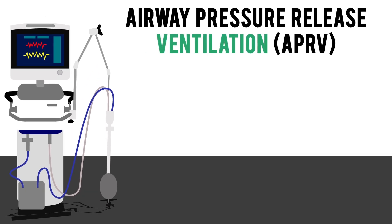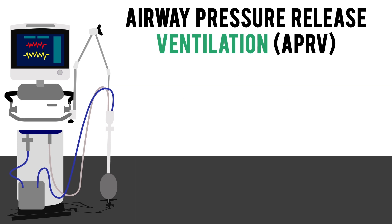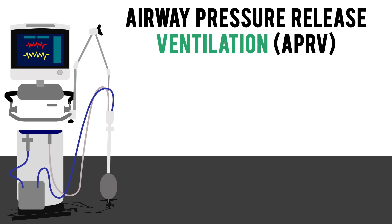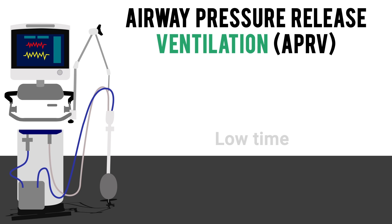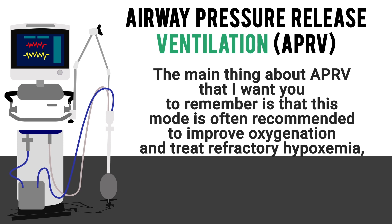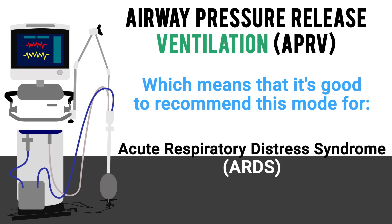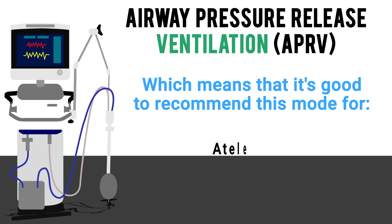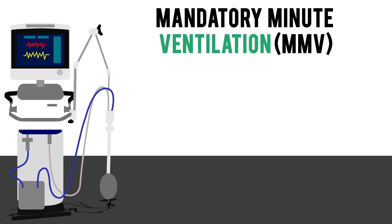APRV, or Airway Pressure Release Ventilation, is a mode in which two levels of CPAP are applied with an intermittent release phase for spontaneous breaths. You set a high pressure, low pressure, high time, and low time. The main thing to remember about APRV is that it is often recommended to improve oxygenation and treat refractory hypoxemia, making it a good choice for ARDS (Acute Respiratory Distress Syndrome), acute lung injury, and in some cases atelectasis.